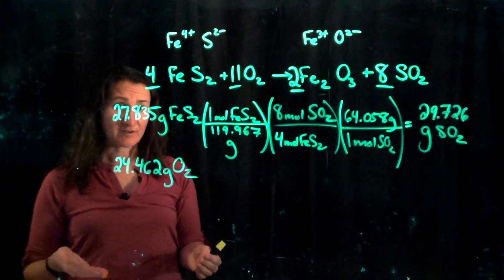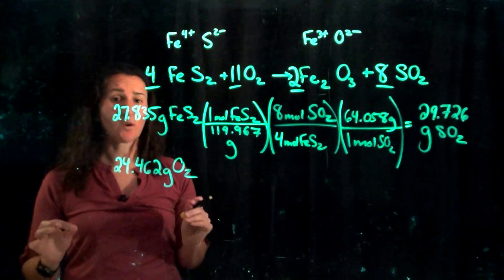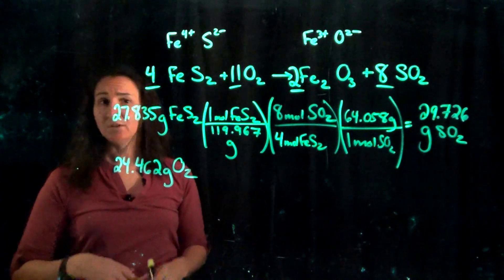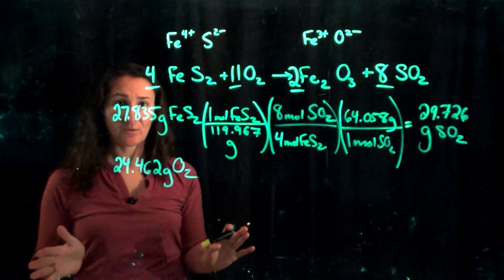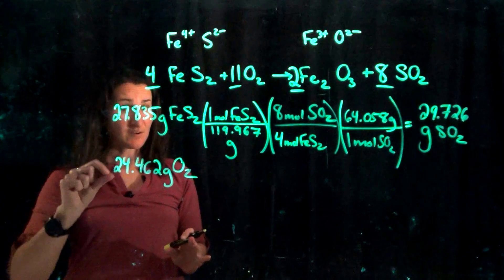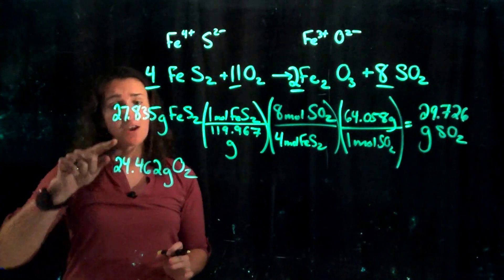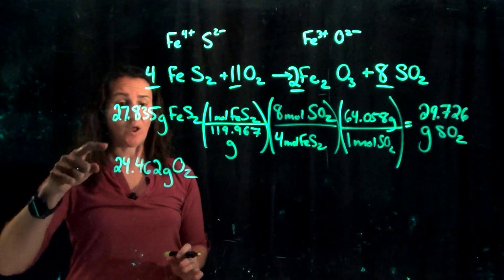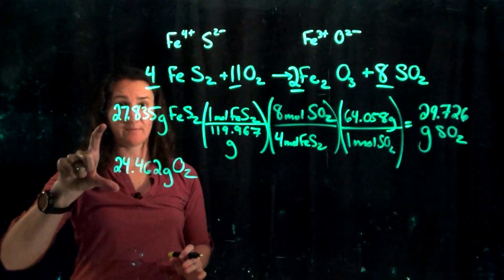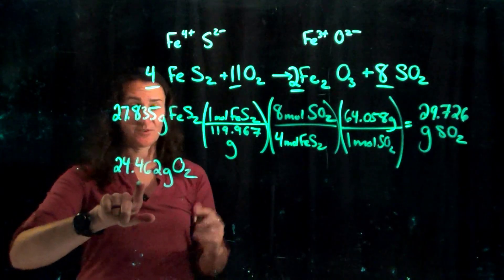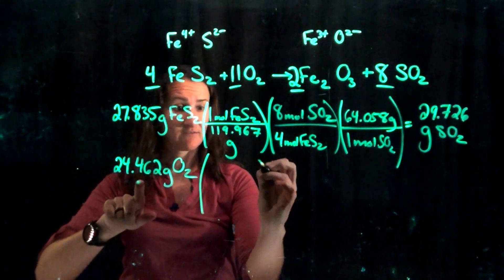One mole remember is equal to 6.022 times 10 to the 23rd molecules, atoms, whatever representative particle you want to use. And so you can compare in moles, you can compare in molecules, you cannot compare to say how many you have more of in grams. All right, so let's do it.